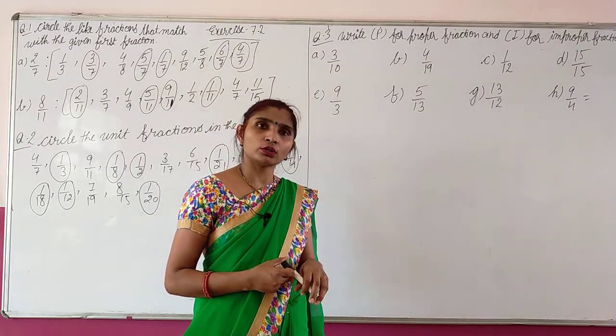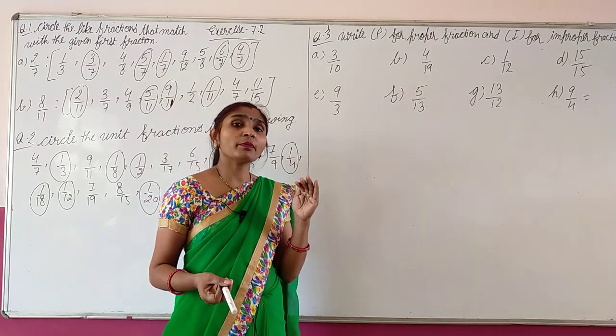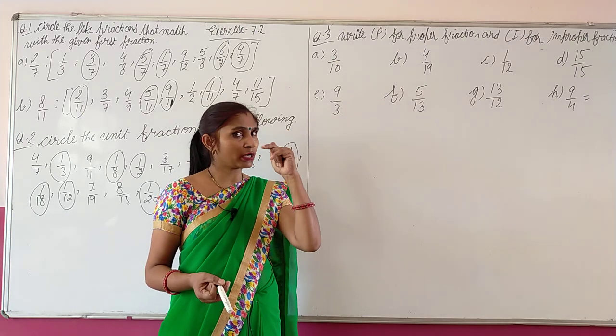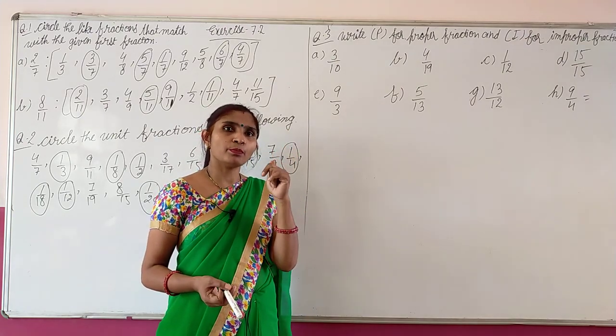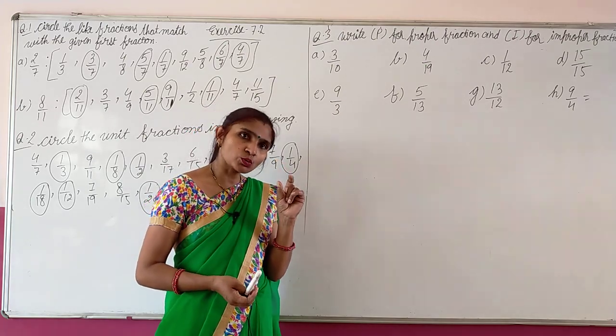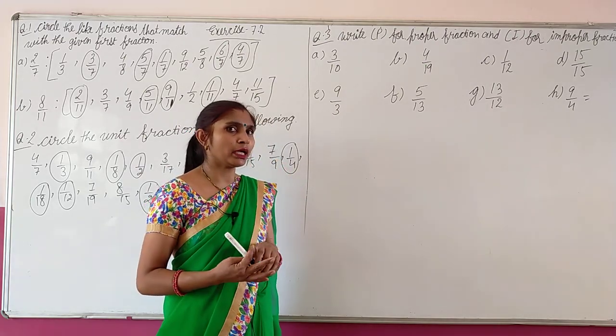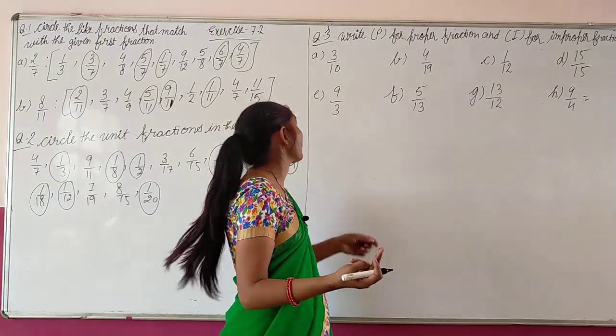Jis me numerator smaller hota hai. Proper way mein kam hongi jab upar chhota hoga, neeche bada hoga. Above upper side, down side bigger. Toh jahan pe numerator kya hoga? Smaller hoga denominator se, hota hai proper fraction. Improper mein numerator bada hota hai.